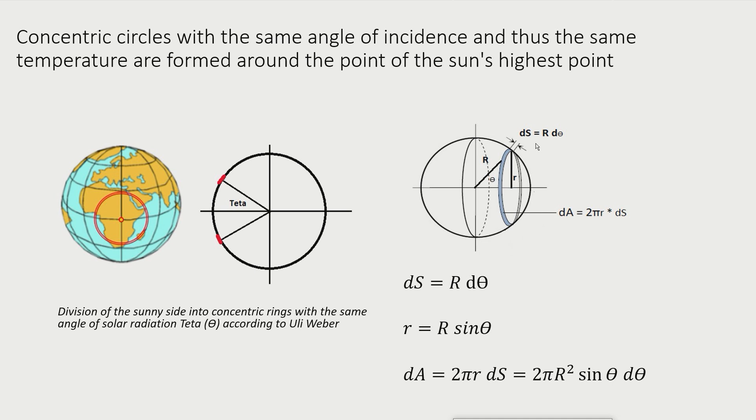The temperature distribution function T of theta divides the sunny side of the Earth into concentric circles with the same surface temperature. In this video I will use Uli Weber's proposal to calculate the Earth's surface temperature without an atmosphere via an integral solution.